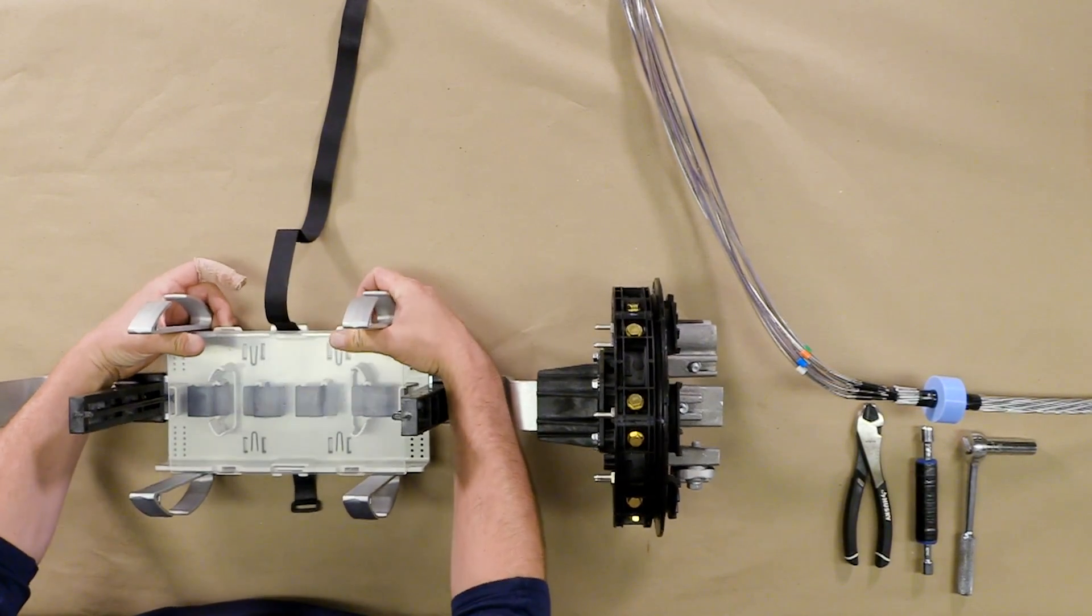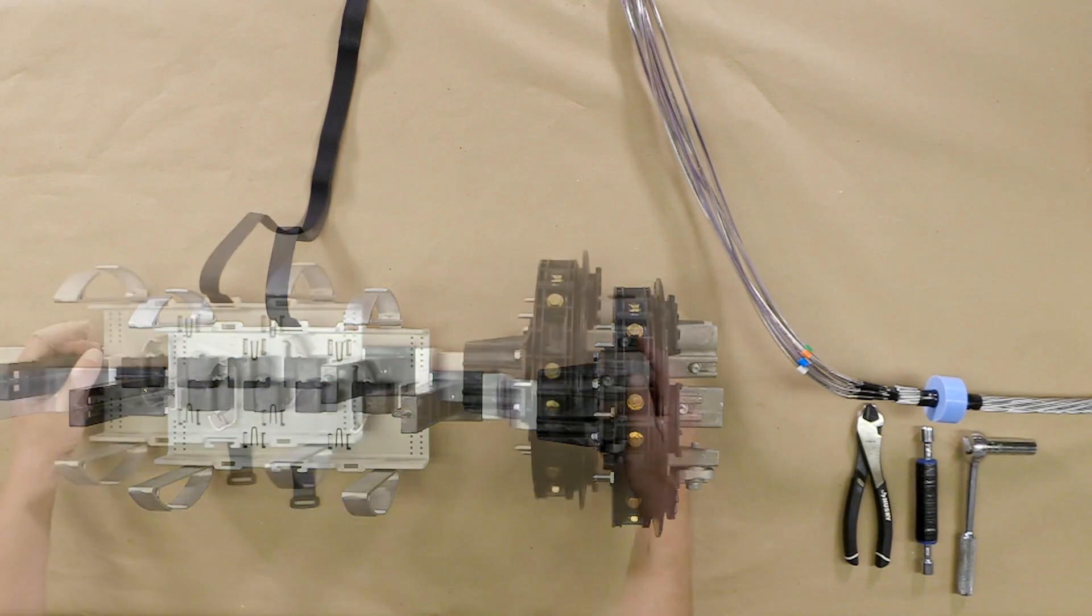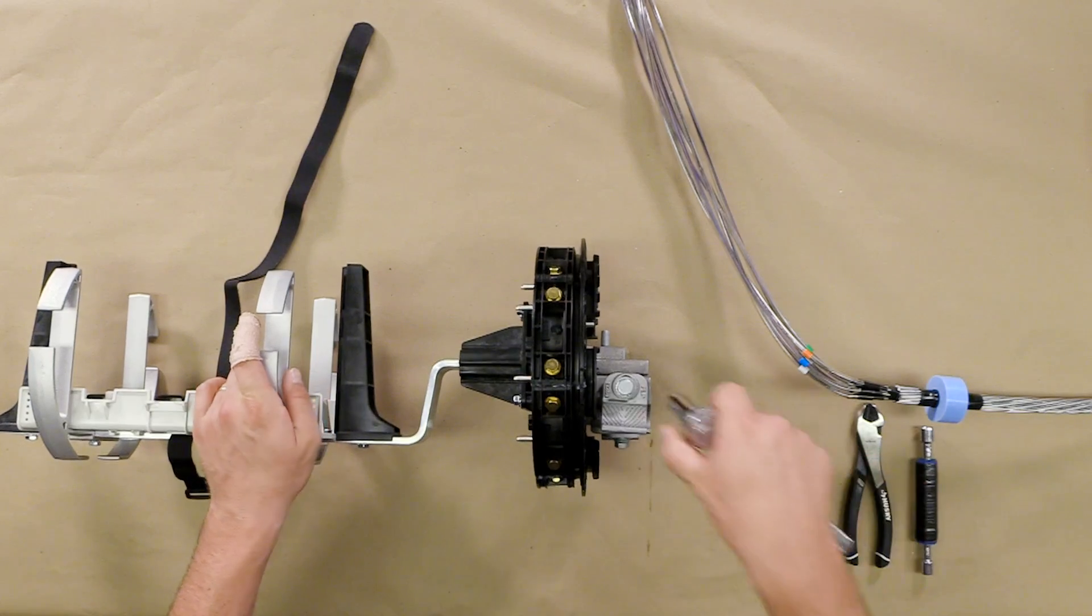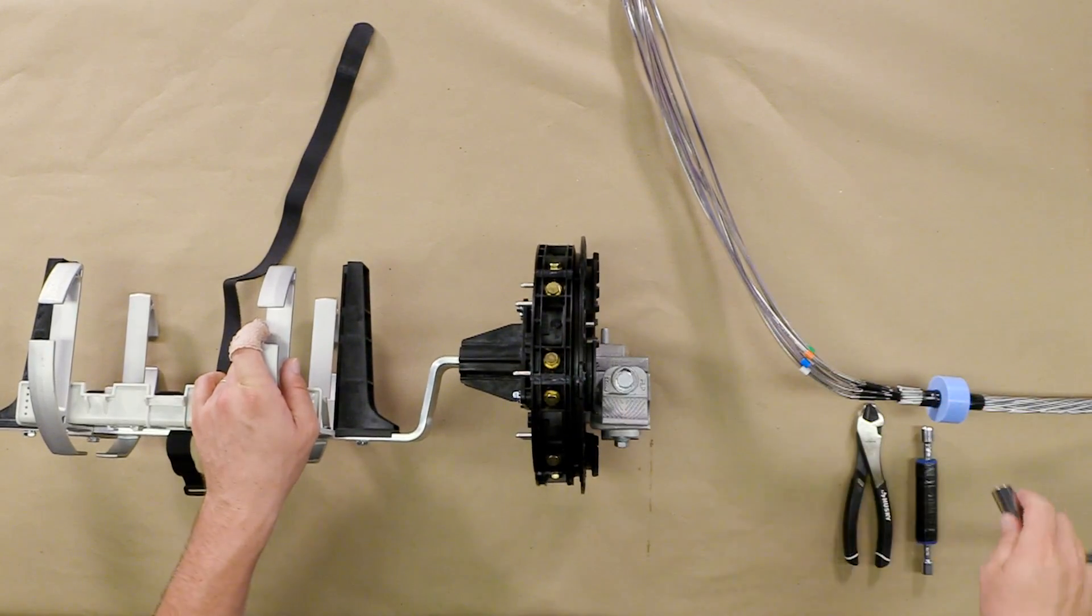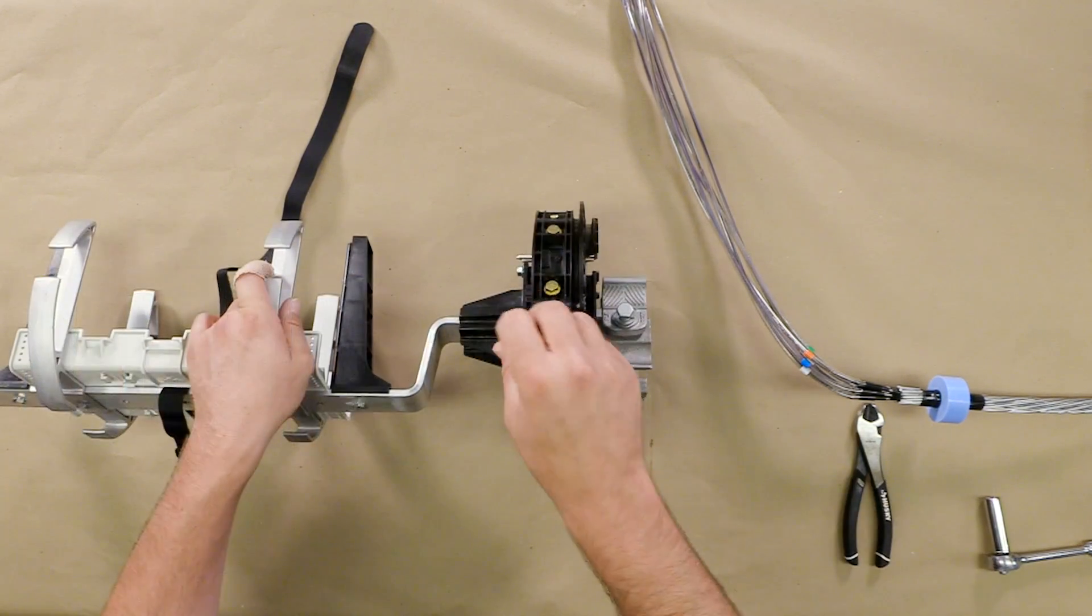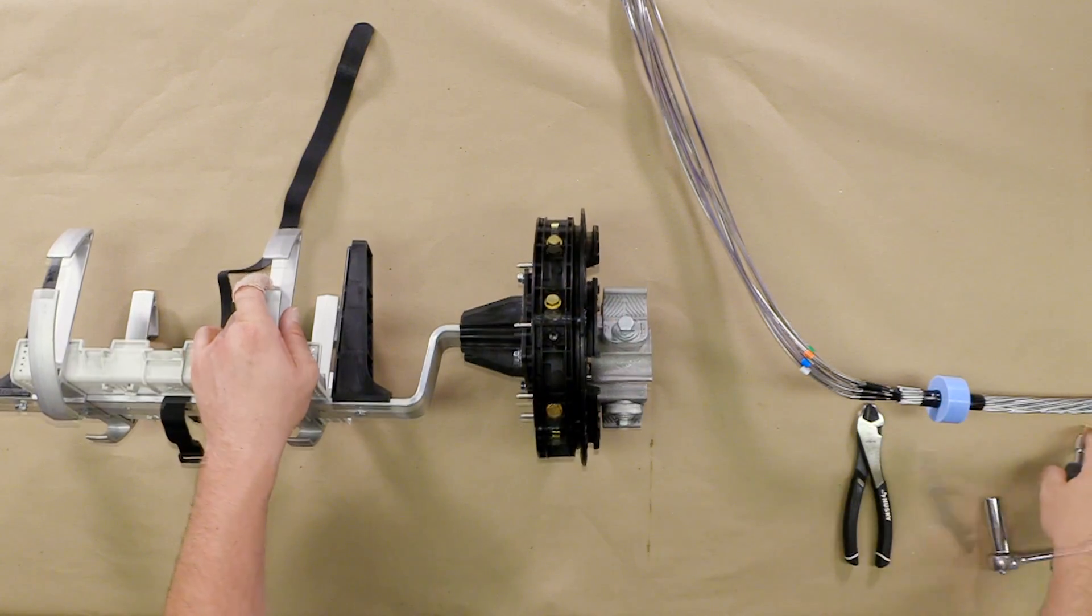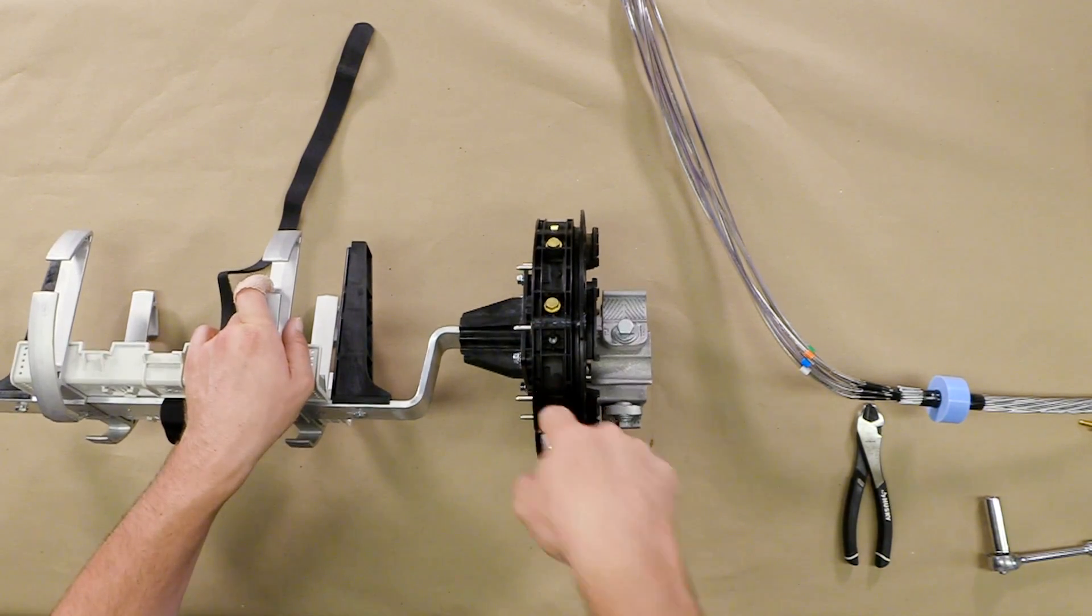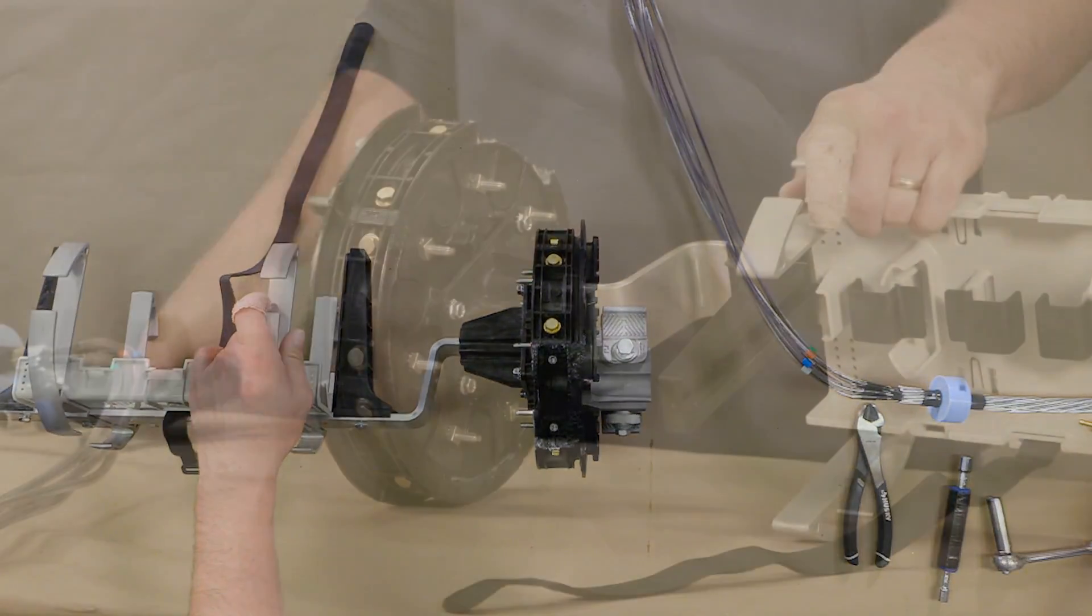Remove the transition tray cover. Loosen the bolt on the CRB keeper and remove designated end cap. Clip out tabs using side cutters.